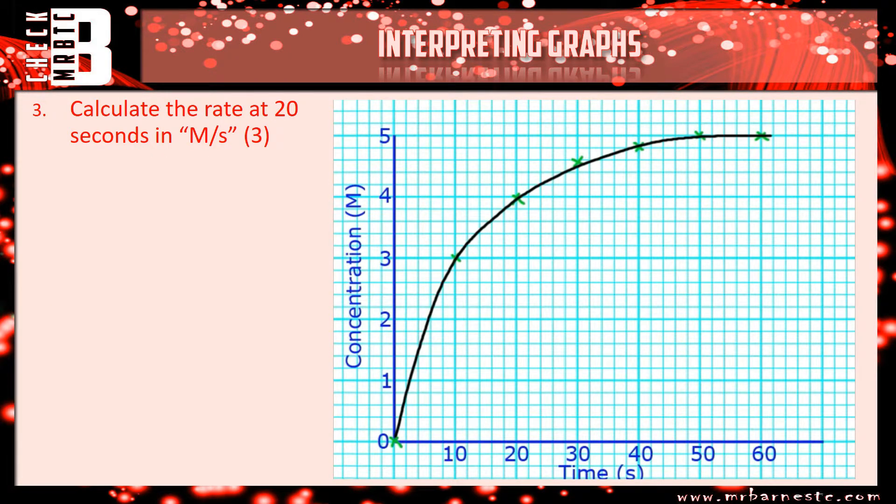Okay, so question three says work out the rate of reaction at 20 seconds. So, the first thing you need to do is to draw your tangent line, and that needs to be somewhere that meets a long, flat 20 seconds. So, I'm going to draw a line there.